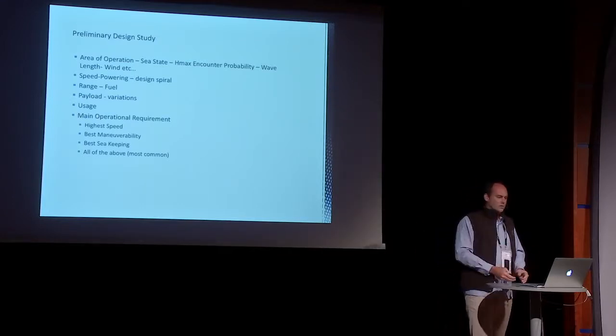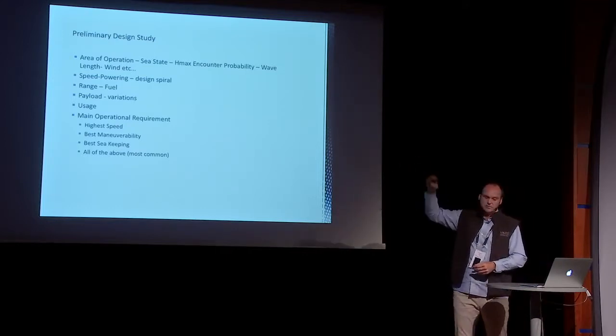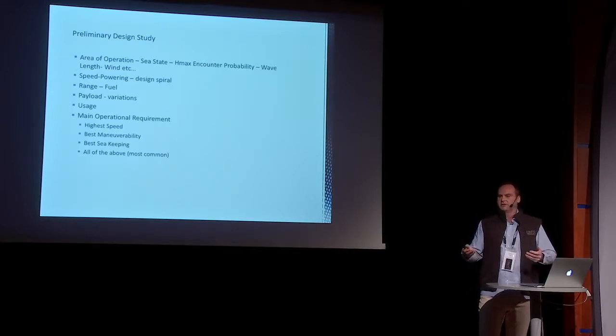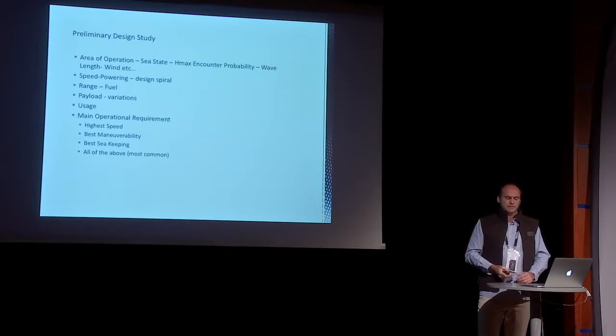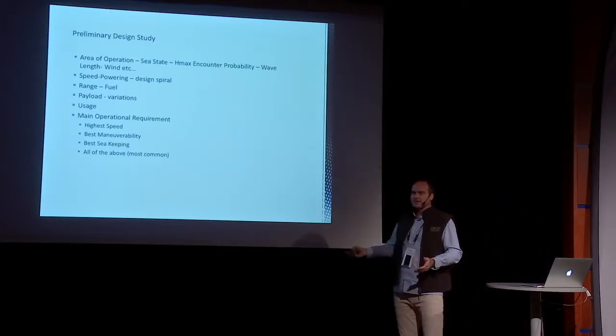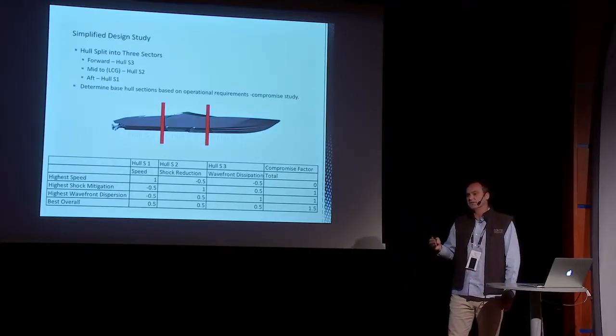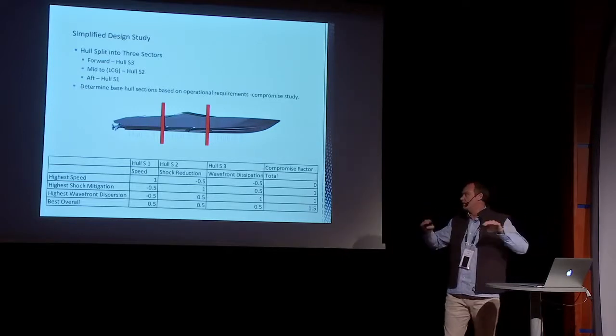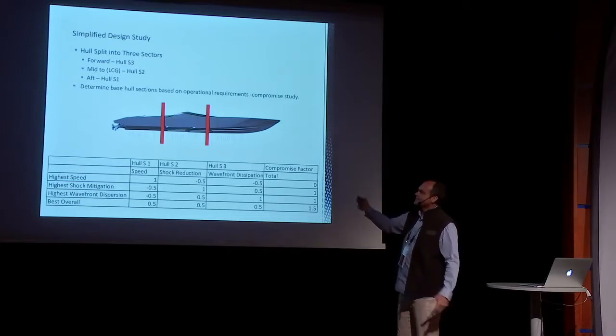So coming back to what the client wants, what's the client's preliminary request? Is it, I want the fastest boat possible? Or is it, I want the best maneuverability? Or is it, I want the best sea keeping? Or more than most commonly it's, I want all three, right? So that's when our compromise comes in. You can't have all three. So something's got to suffer.